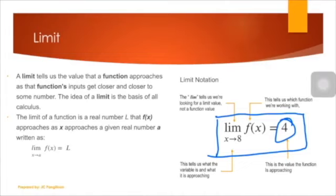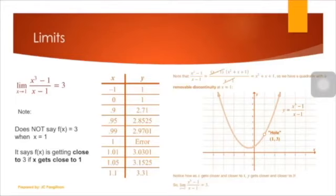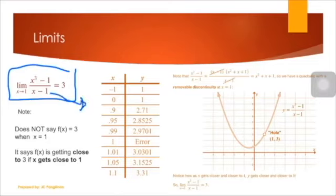Take note, there are some rules that you have to observe to be able to evaluate the limit of a function. This is an illustration: the limit of x cubed minus 1 divided by x minus 1 as x approaches 1 equals 3. Now take note that the denominator gives you restriction that you cannot assume x equal to 1 because the denominator becomes 0. That's why we have no one is error.